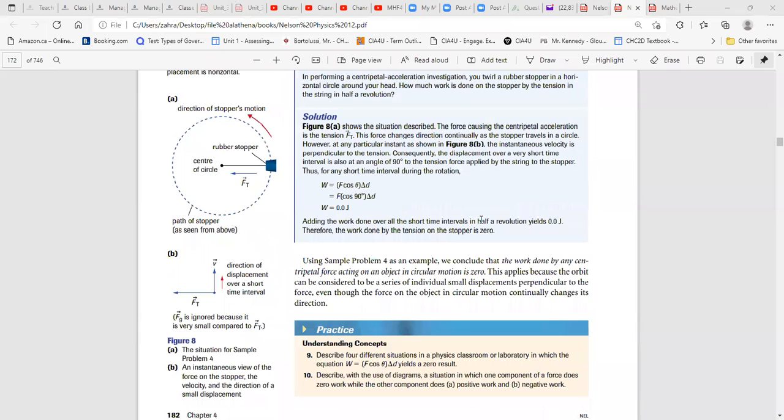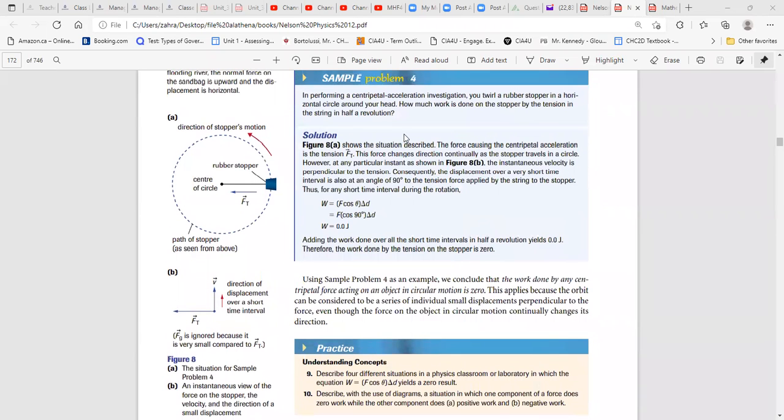Looking at this question. In performing a centripetal acceleration investigation, you twirl a rubber stopper in a horizontal circle around the head. How much work done on this topic by tension and string and half a revolution? Since displacement is always perpendicular into the tension. So if tension is there, that is your displacement, right? It doesn't matter where this rubber is. It's always perpendicular. If angle is 90 degree cosine is zero, so it will give you a zero work.